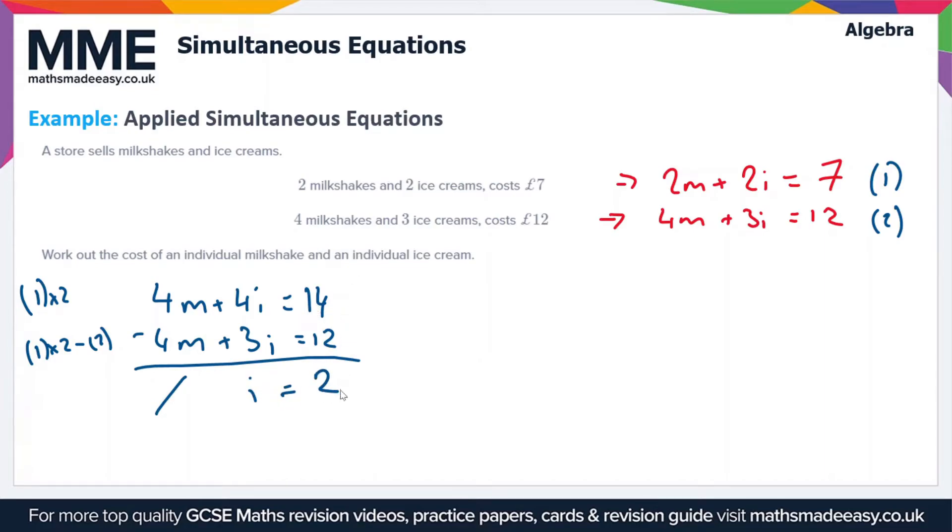So we get i equals 2, that's easy enough. Now we just need to substitute this value of i equals 2 into one of the equations to work out what m is. Let's circle this so we remember that i is 2.